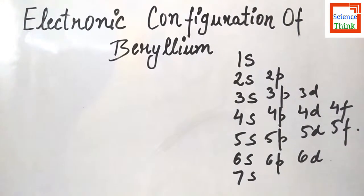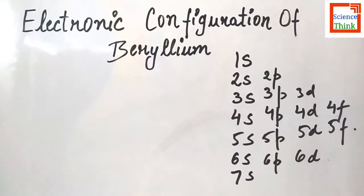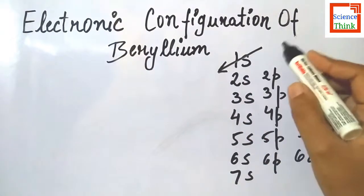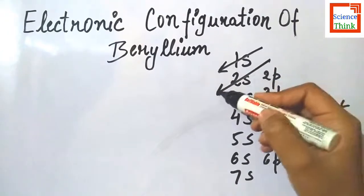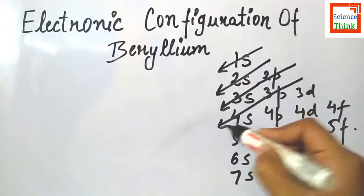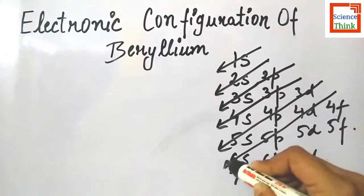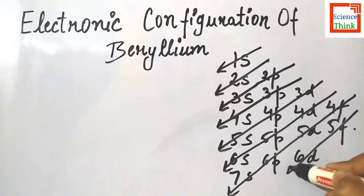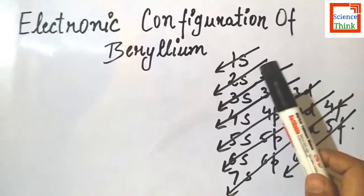So this is the chart which gives us information of how to fill the electrons in orbitals of any atom. So the electrons are filled in the orbitals in this order: firstly we will fill the 1s, then 2s, then 2p and 3s, then 3p, 4s, 3d, 4p, 5s, 4d, 5p, 6s, 4f, 5d, 6p, 7s, and then 5f and 6d. So this will be the order of filling of orbitals.